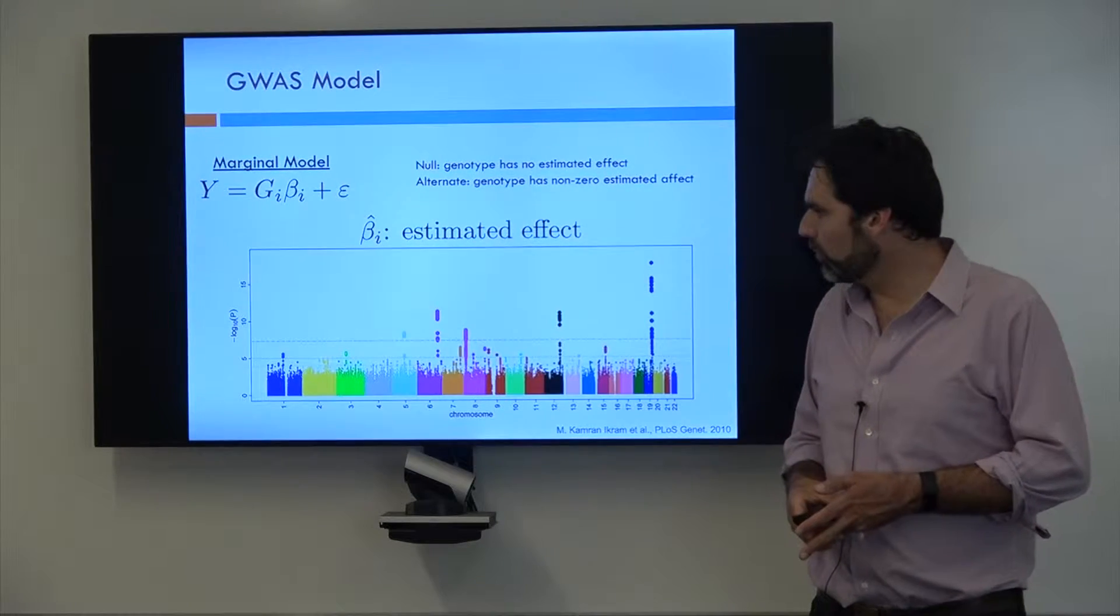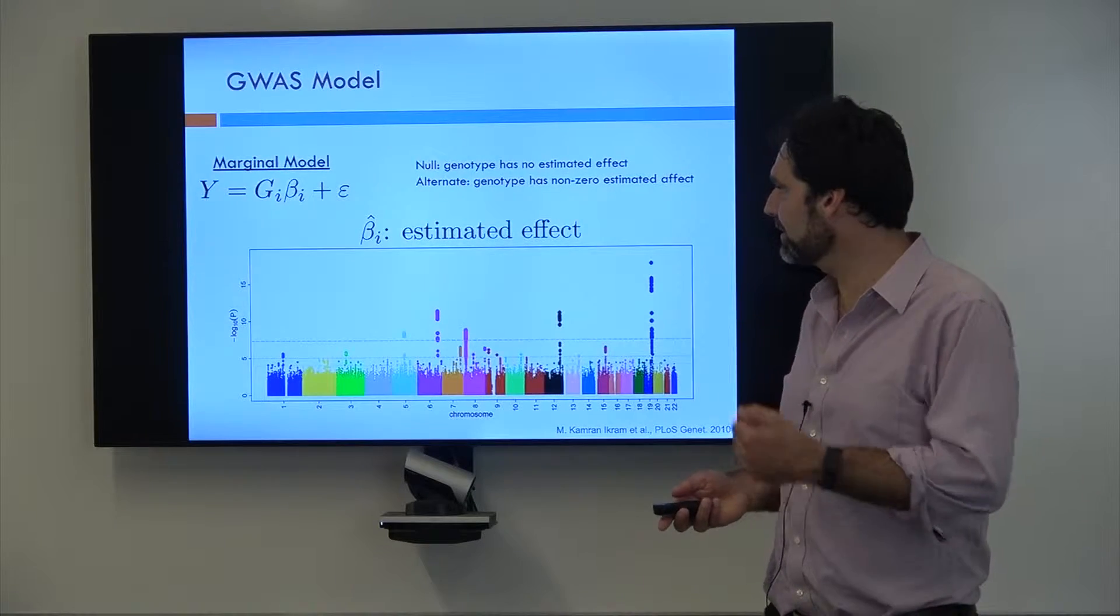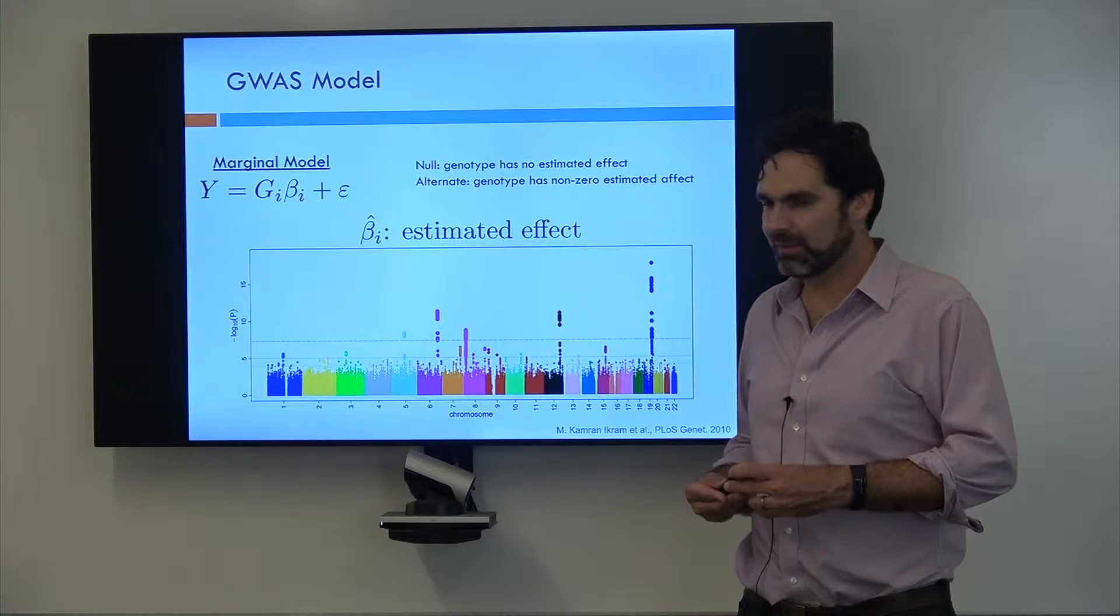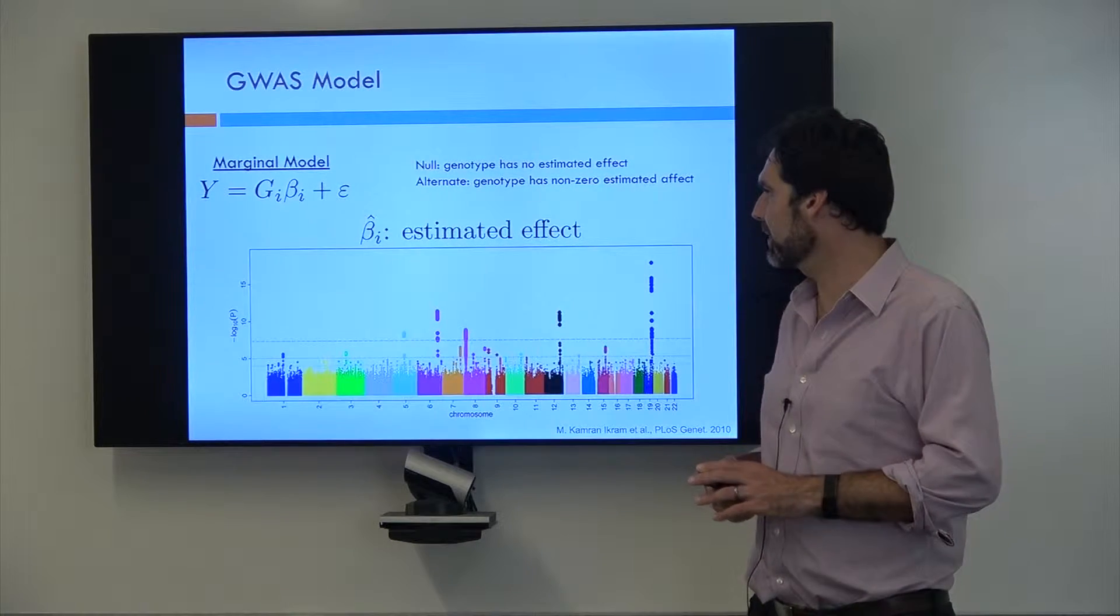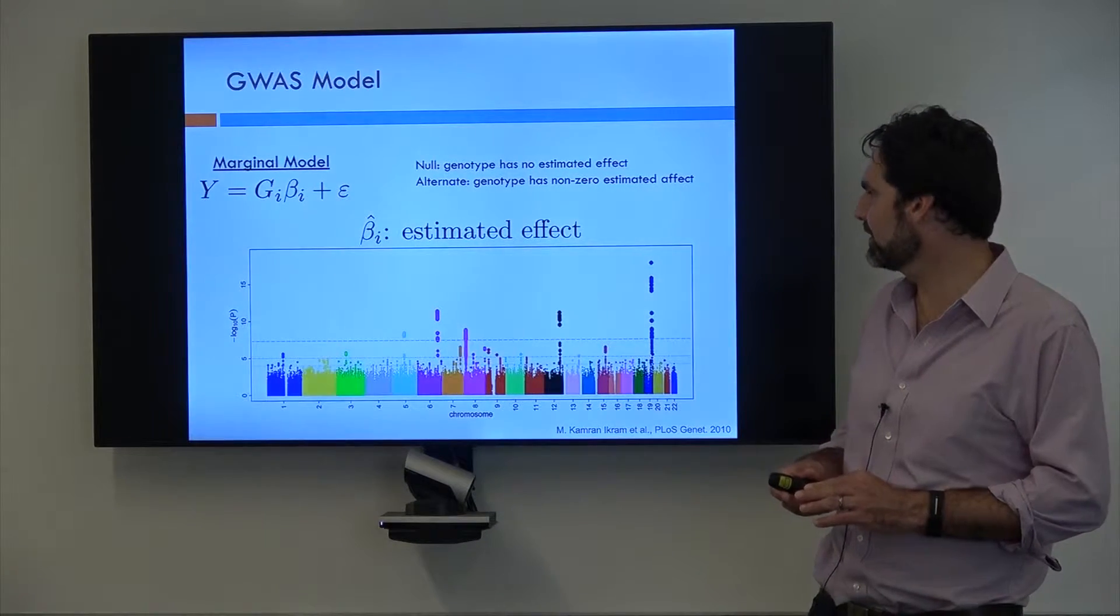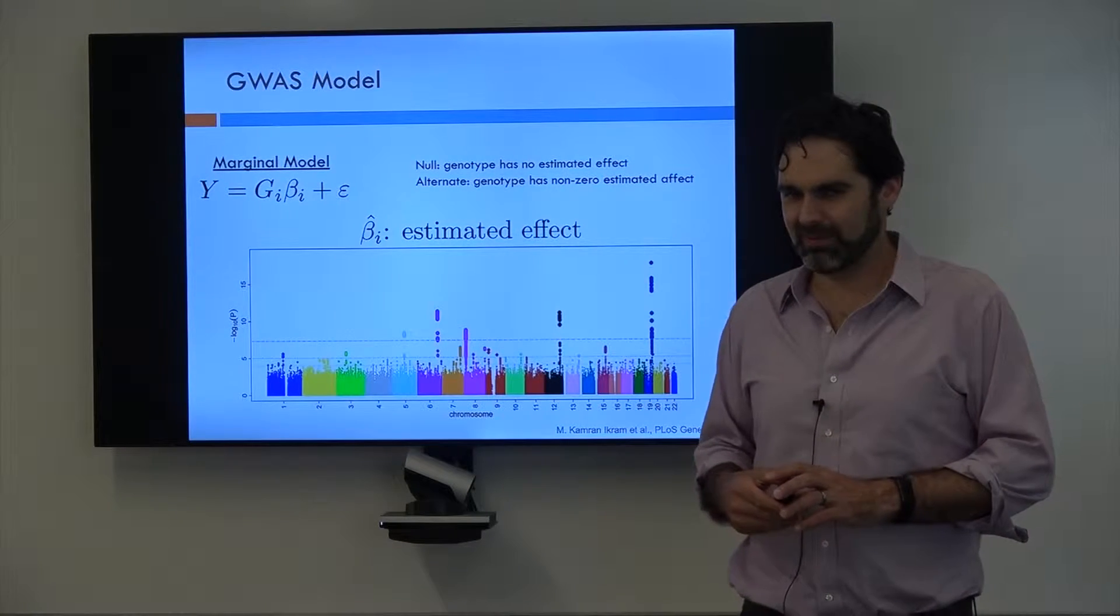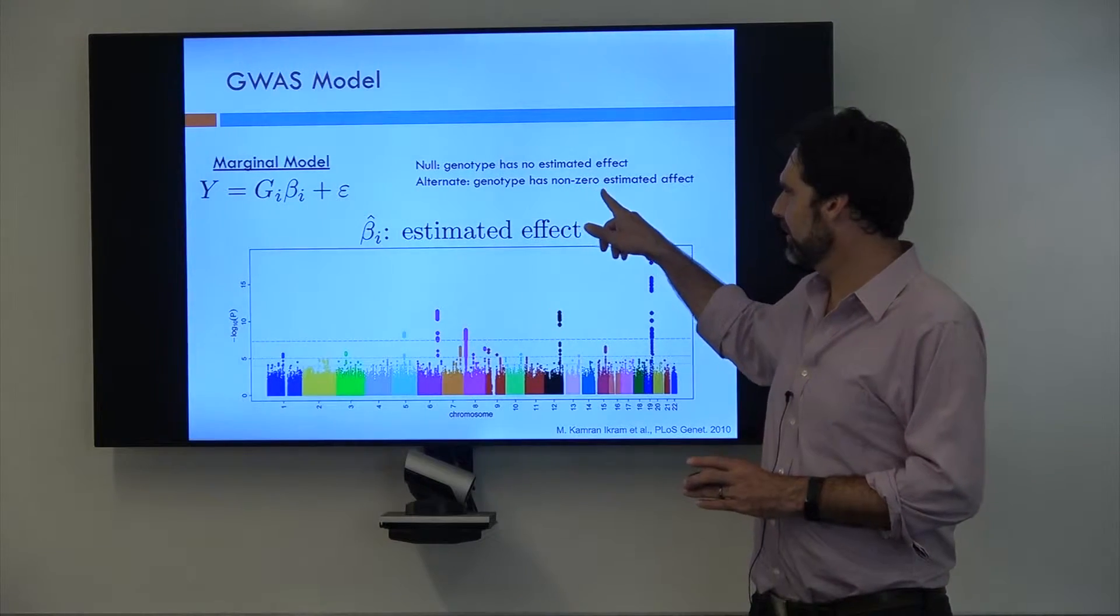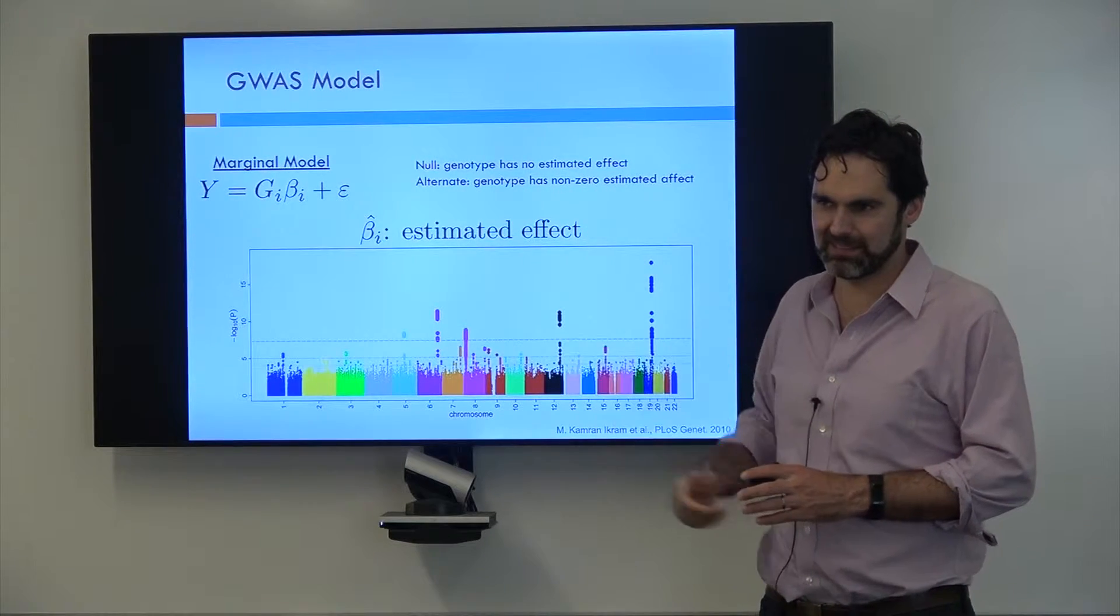Since we have a p-value, we obviously have to have a null hypothesis and an alternate hypothesis. Our null is that our genotype has no estimated effect on the phenotype. Our alternate is that our genotype has a non-zero estimated effect. So question for the crowd, why do I say that it has a non-zero estimated effect as my alternate, as opposed to a non-zero effect?